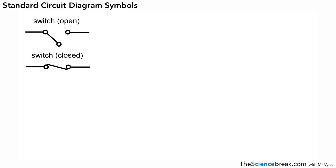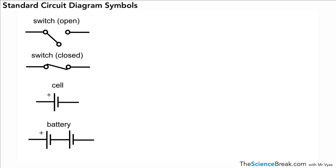The next one — in everyday language we might call this a battery, but in actual fact when we have only one we call that a cell. It's when we have many together that we actually call those a battery — a battery of cells — when we have two or more cells joined together. Notice the plus sign on the longer side of the cell.